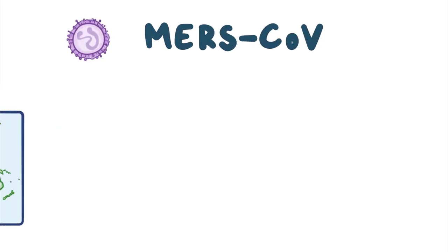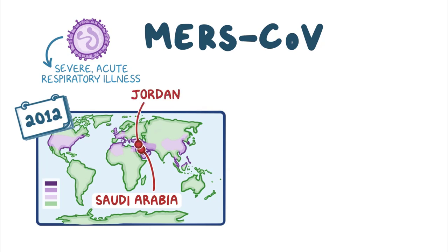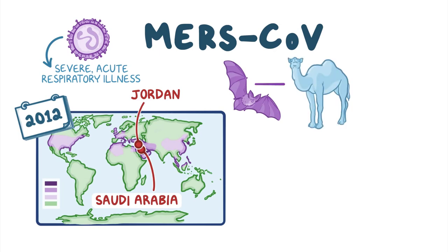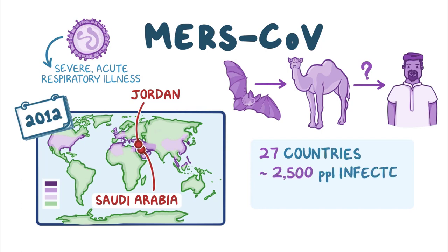MERS-CoV caused the MERS outbreak in 2012. The severe acute respiratory illness was first reported in Saudi Arabia and then was retrospectively reported in a case in Jordan around the same time. The virus also likely hopped from bats, but this time into dromedary camels, which became a reservoir. The final step in its transmission into humans isn't clear, but transmission between people helped MERS spread to 27 countries, affecting nearly 2,500 people and causing at least 850 deaths. All cases were linked to either living in or traveling to the Arabian Peninsula, or being in close contact with someone else who had. Sporadic cases of MERS in the Middle East have occurred since the initial outbreak.